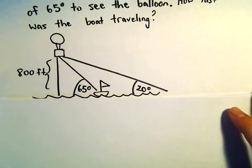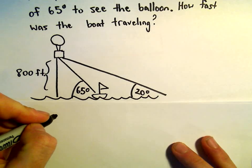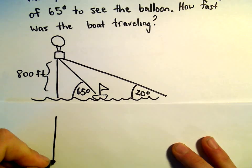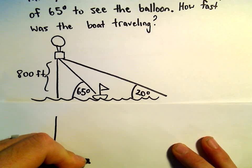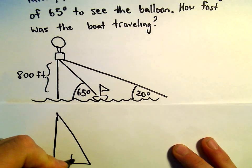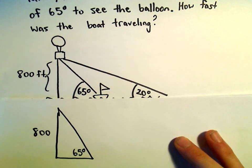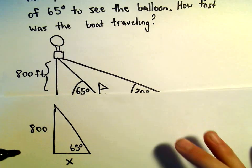I'm going to think about two right triangles that have been made by this balloon and the boat. We know it's 800 feet tall. When the boat is closer to the balloon, that's when it's making this angle of 65 degrees. Again, we know the height here is 800. Maybe we can call the width x.